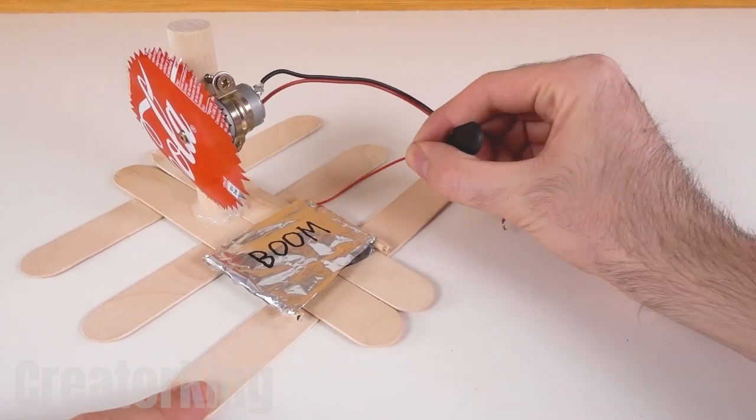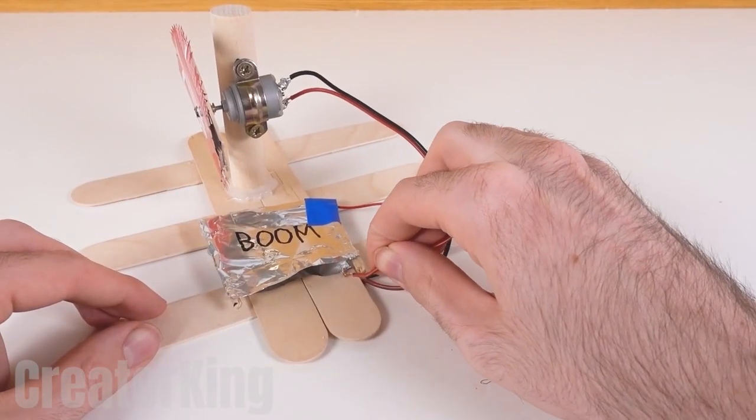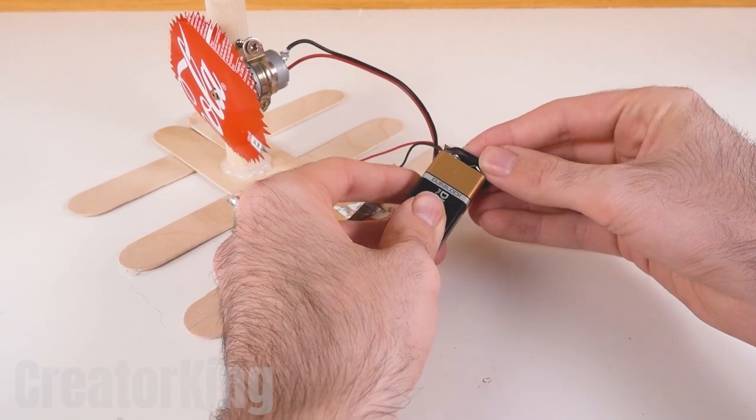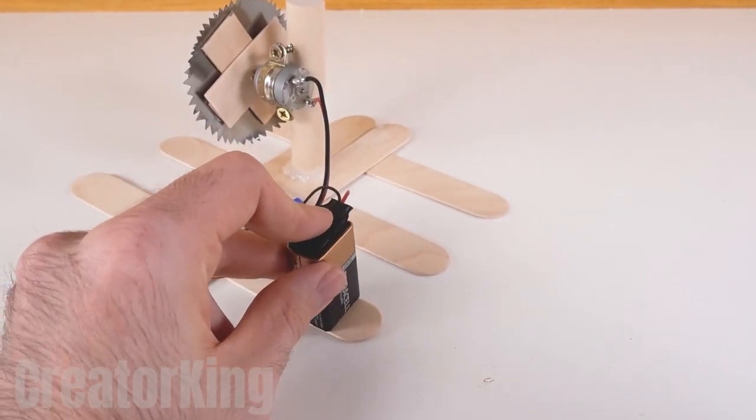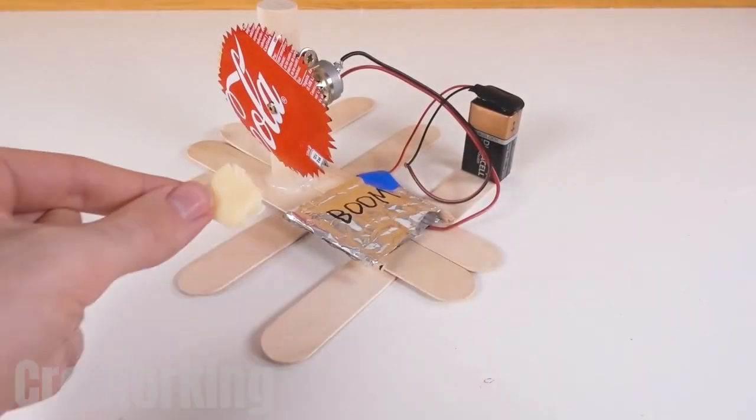The red wires from both the motor and the snap will be attached to the pressure plate. The battery is the last step before putting this baby into action. Connect it to the snap and hot glue it to one of the protruding popsicle sticks.